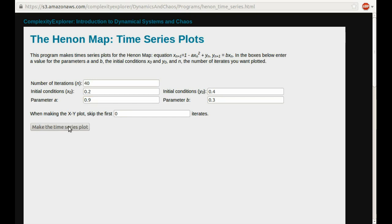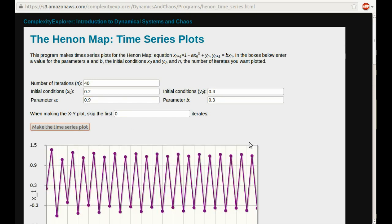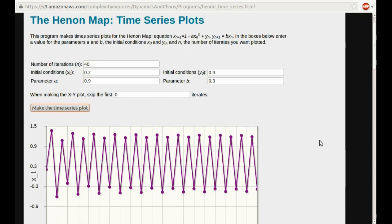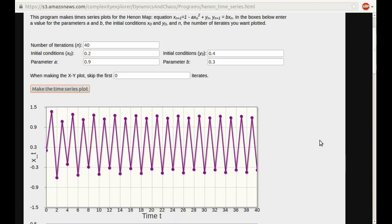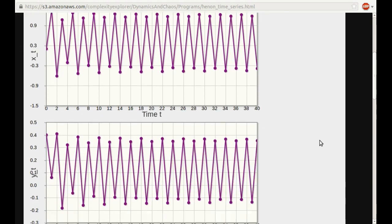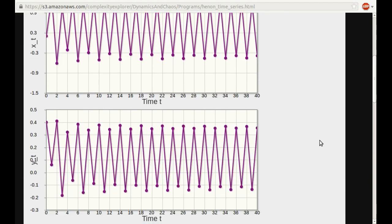So let's make the plot. So this is a time series plot for the X values. The X values change over time. Time 0, time 1, time 2, and so on. And there's the time series plot. And here's a time series plot for the Y value. It also changes over time. And we can make time series plots for both X and Y separately, just like we did for the logistic equation.